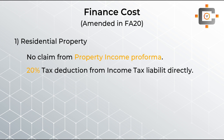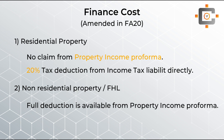So the finance cost deduction is available, but not from the property income pro forma — it's available directly at the time of income tax liability calculation. However, if you are having non-residential property or furnished holiday letting and you are paying finance cost for any of these properties, then you can claim your finance cost from the property income pro forma. This means you can get a 20%, 40%, or 45% tax benefit, compared to the fixed 20% for residential property.